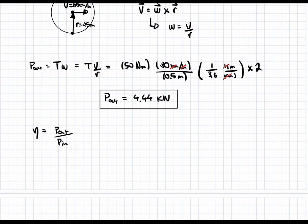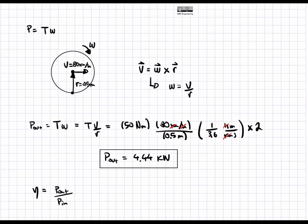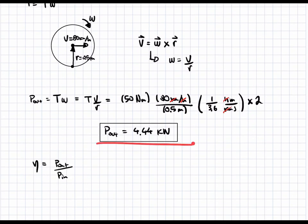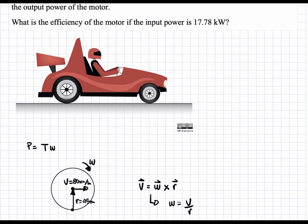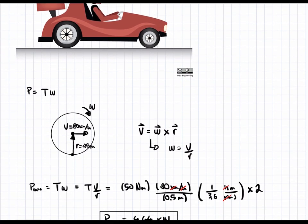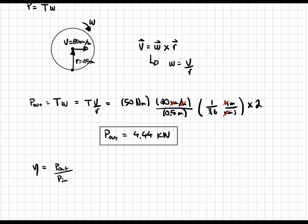In this case, the output power — the useful power propelling the car forward — was calculated to be 4.44 kilowatts, and we are given an input power of 17.78 kilowatts. Dividing these two values: 4.44 kilowatts divided by 17.78 kilowatts gives an efficiency of 0.25, or 25%. This is our final answer for the efficiency of the motor.